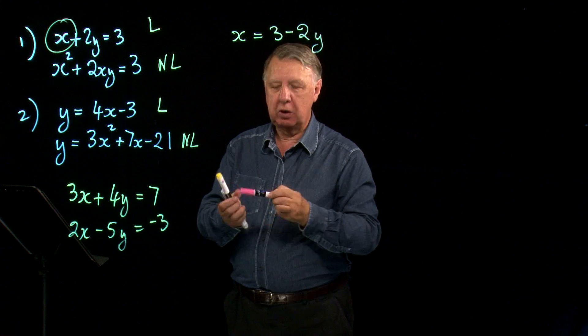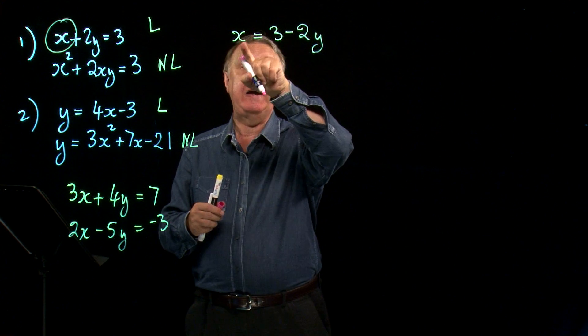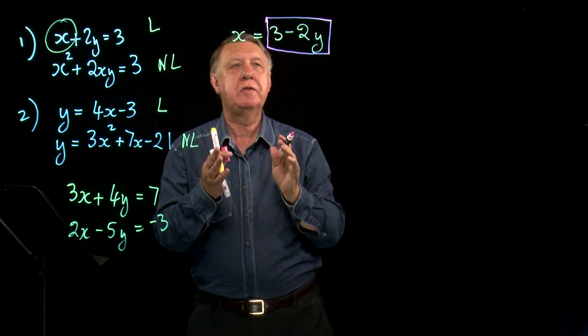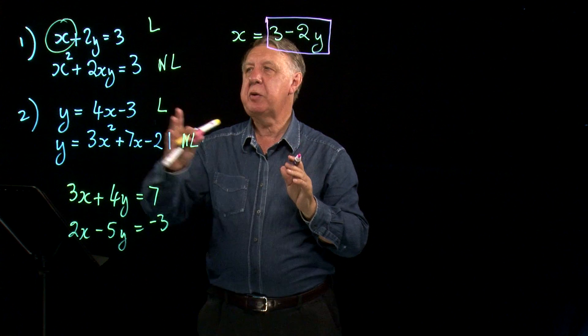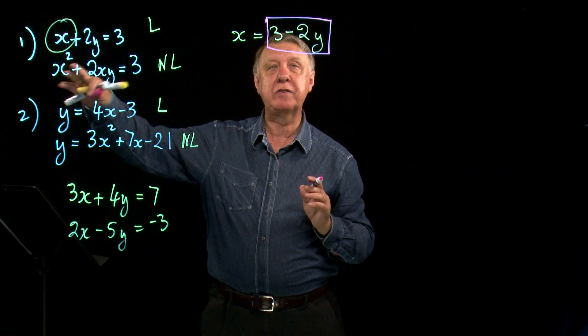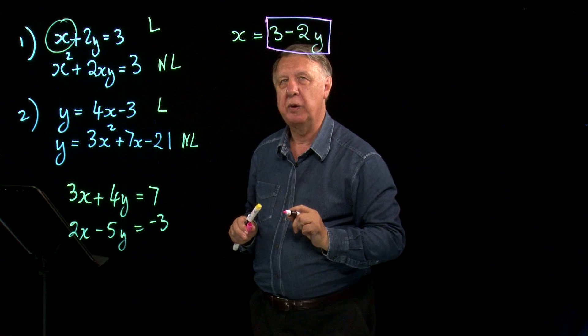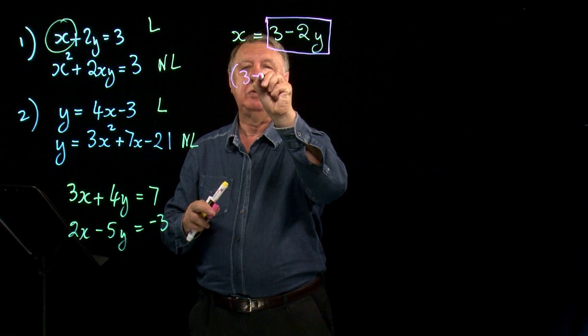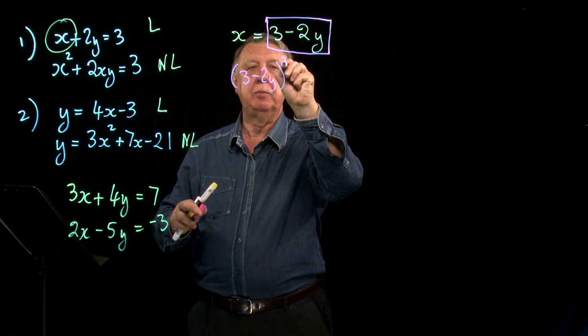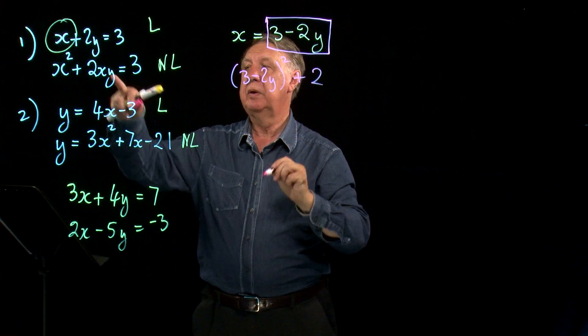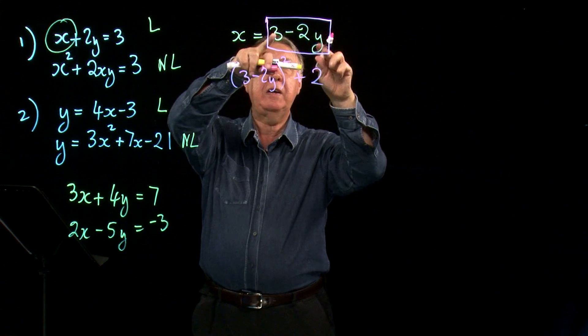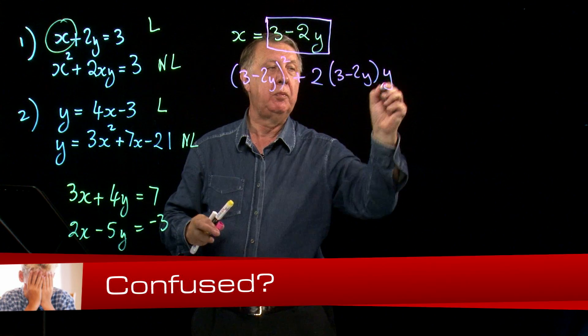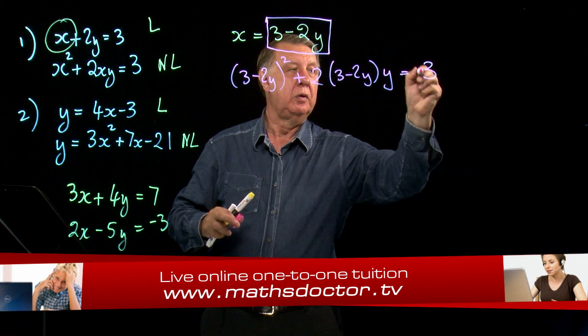Now try and visualize, so this says very clearly x equals that. So if you like, this little box here is x. So everywhere in the second equation that I see the letter x, I'm going to replace with this square box. So here's x, square box squared, plus two x, here's x, square box times y equals 3.